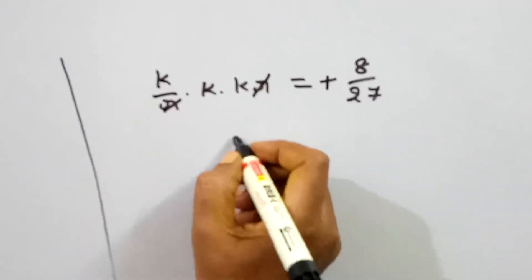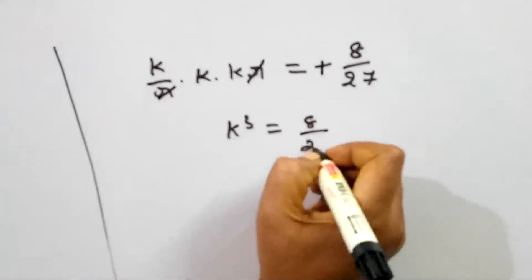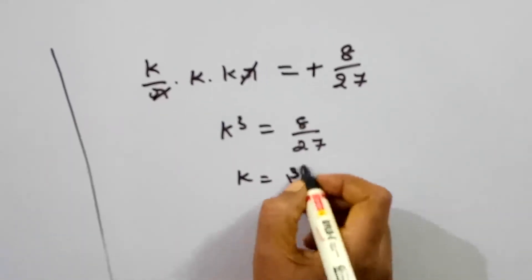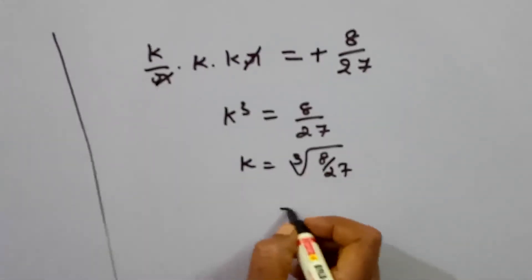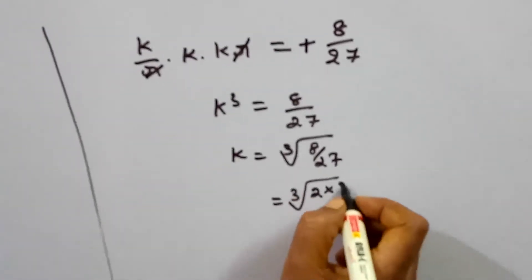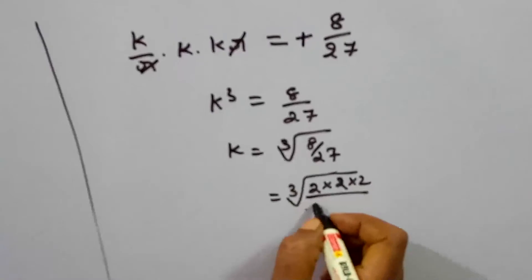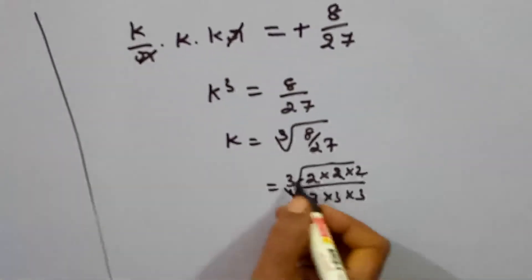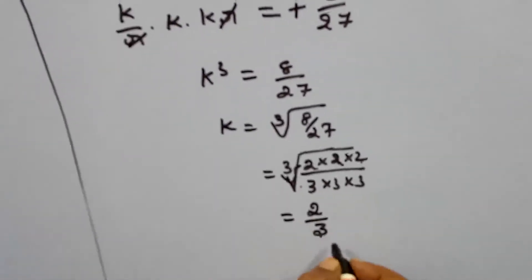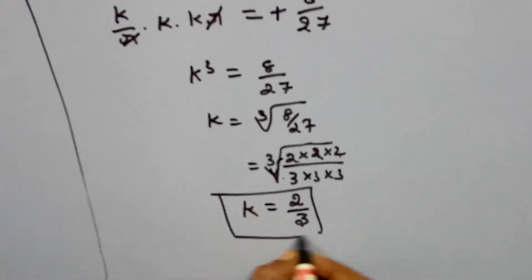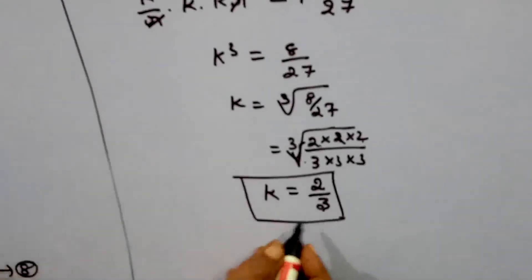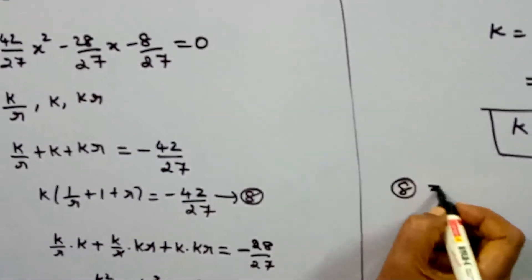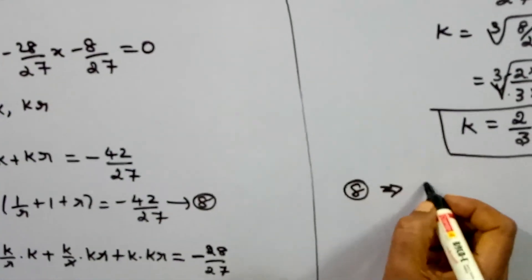From k³ = 8/27, we calculate k = cube root of 8/27. Since 8 = 2³ and 27 = 3³, we get k = 2/3. Now we substitute k = 2/3 into equation 8 to find the value of 1/r + 1 + r.